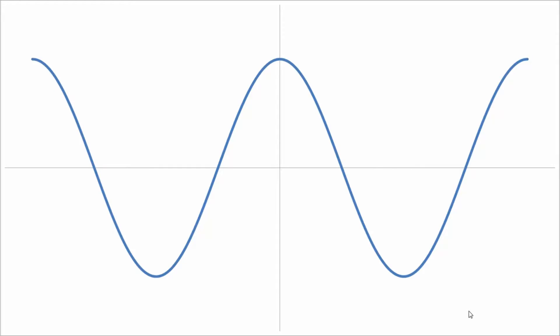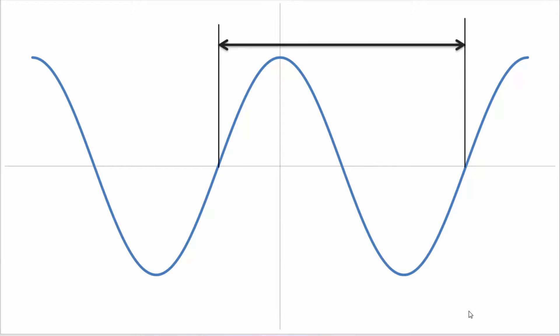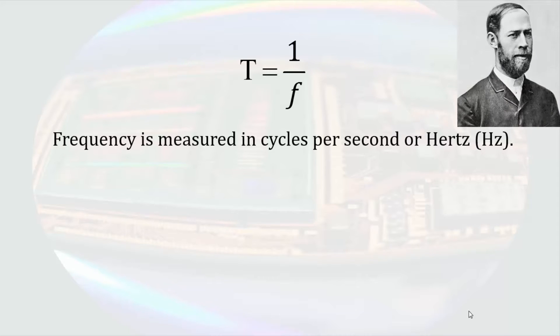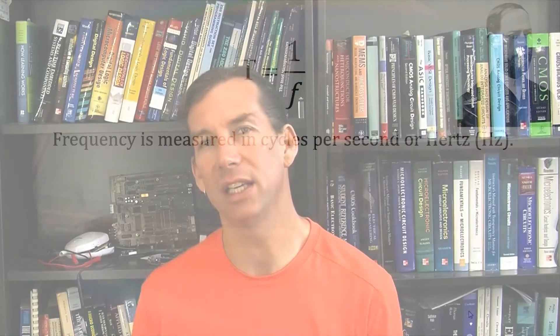If we look at a cosine function, the obvious attributes of the wave are its height, which we refer to as the amplitude, and its period, which is the time it takes for the wave to complete a cycle. In general we do not use the period of a wave in equations or conversation, but instead describe waves in terms of frequency. The frequency of a wave is the inverse of the period and is a measure of how many times per second the wave repeats. The terminology we use for this is cycles per second, which is the unit of hertz.